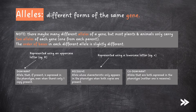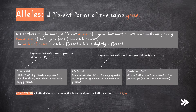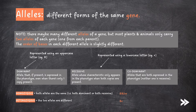Note that in a diploid organism, the alleles at a specific locus may be homozygous, which is when both alleles are the same, i.e. both dominant or both recessive, or heterozygous, i.e. the two alleles are different.